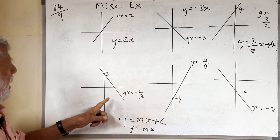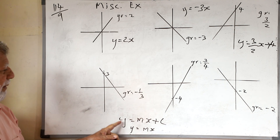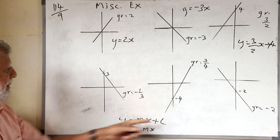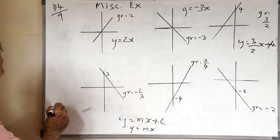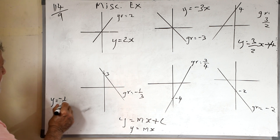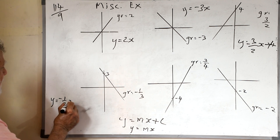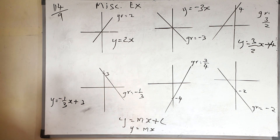This one is going through 3 on the y-axis. The formula equation is y = mx + c, and the gradient given is minus 1/3. So we can write the equation as y = (-1/3)x + 3. The equation of this line is y = (-1/3)x + 3.